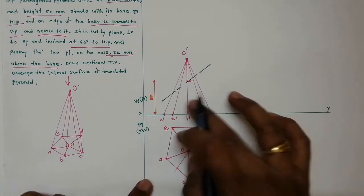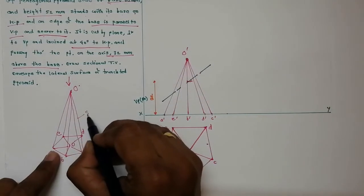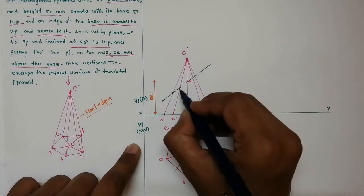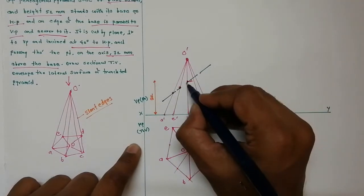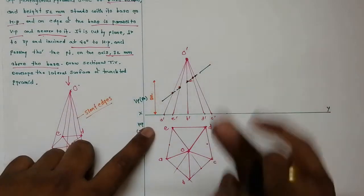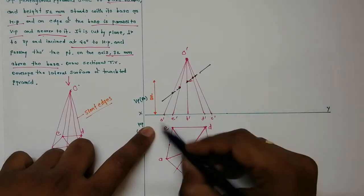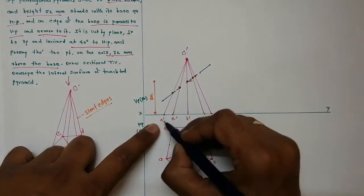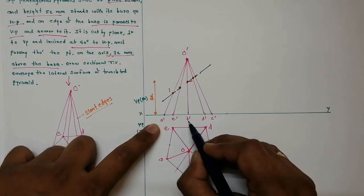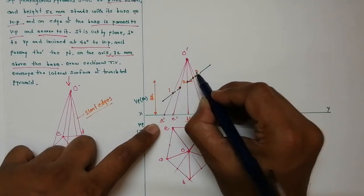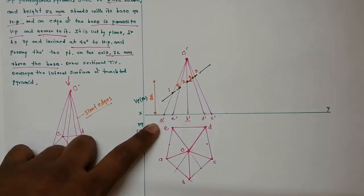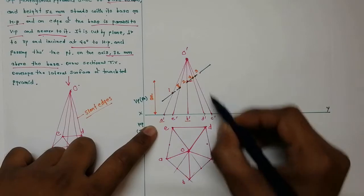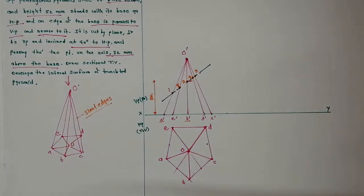The cutting plane cuts the slant edges of the pyramid. We mark the intersections on the slant edges alphabetically: intersection 1 on slant edge OA′, 2 on OB′, 3 on OC′, 4 on OD′, and 5 on OE′. Always mark intersections alphabetically — one intersection per slant edge since there is only one slant edge in each case.